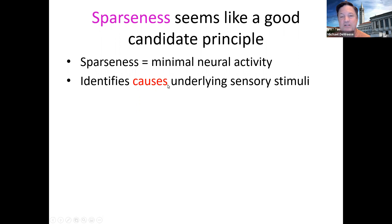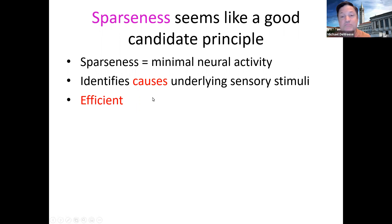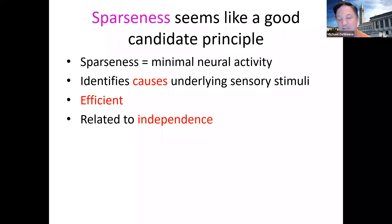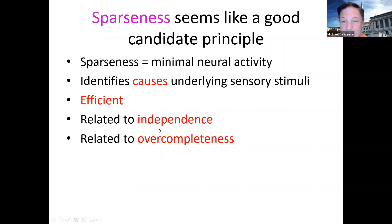The idea of sparseness will automatically, in a natural way, give us some idea about the causes underlying what produces a visual scene, which is actually useful biologically. Sparseness is efficient — if you only have a few active neurons, you're going to use less energy. It's also related to independence: if you want as much information as possible from each of your very few active neurons, the more independent they are, the more information you can hope to get by looking at more of them.